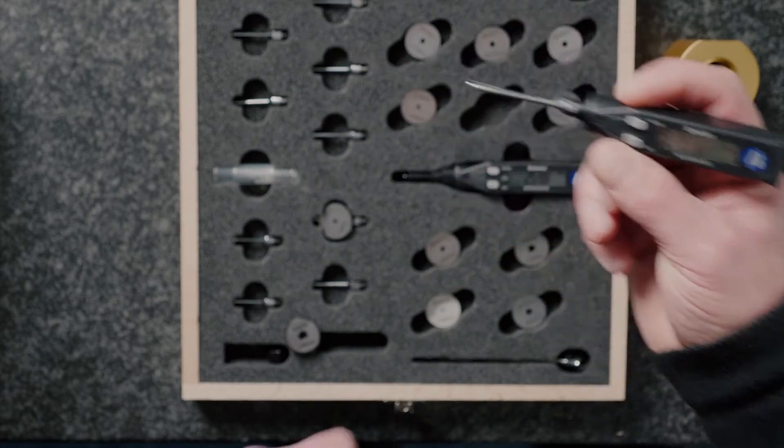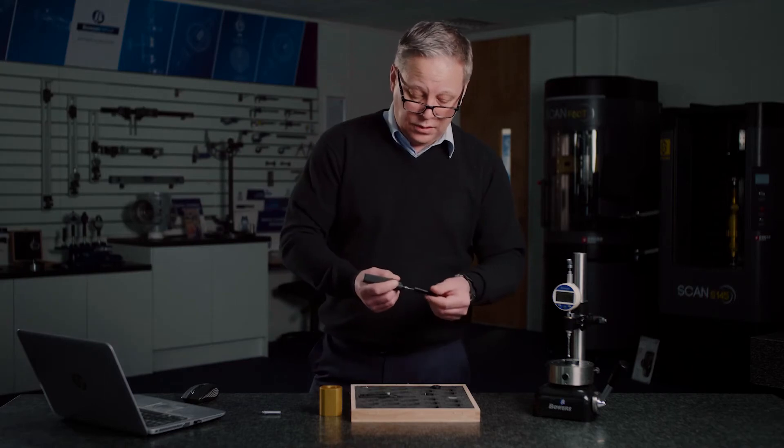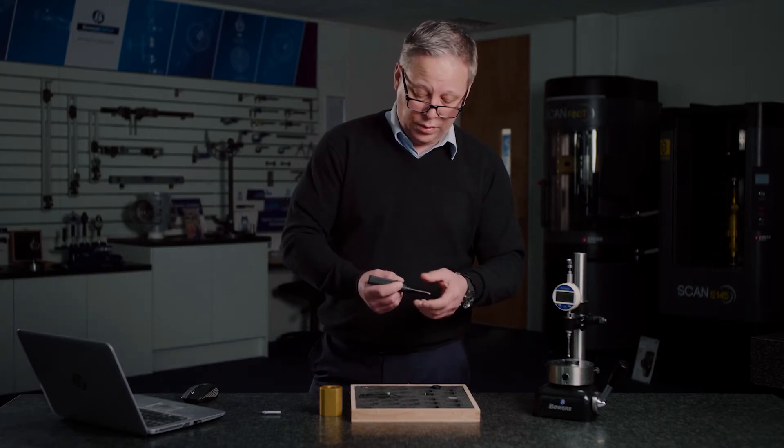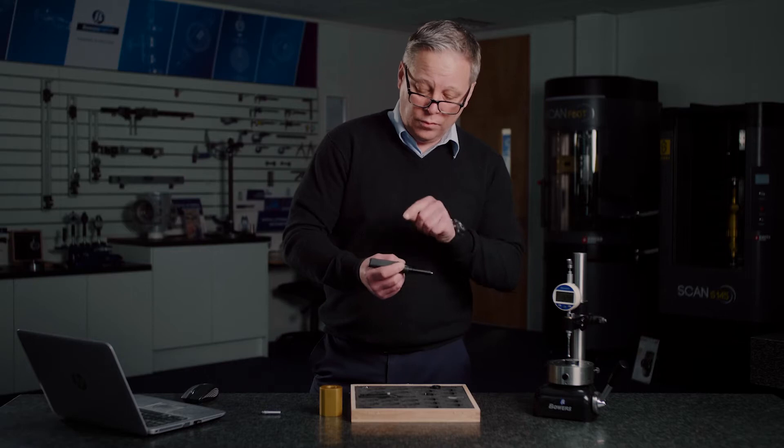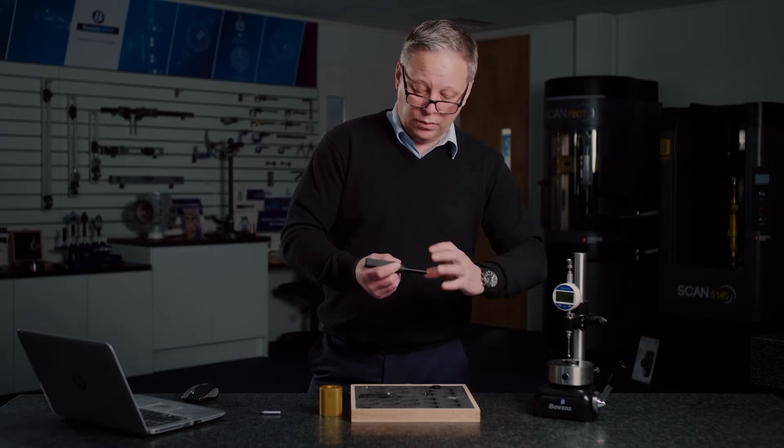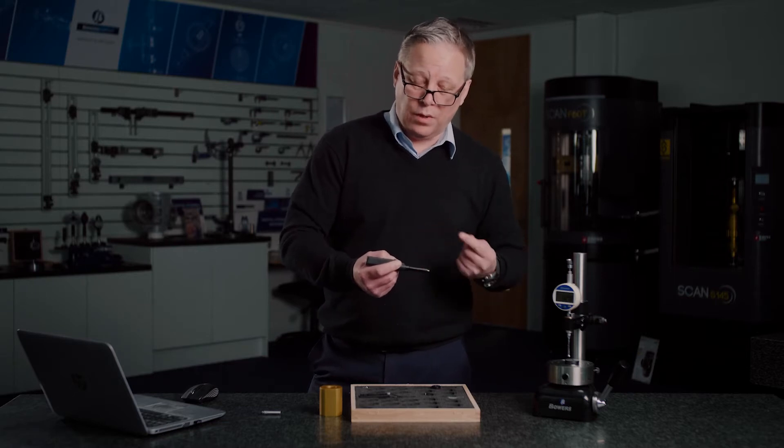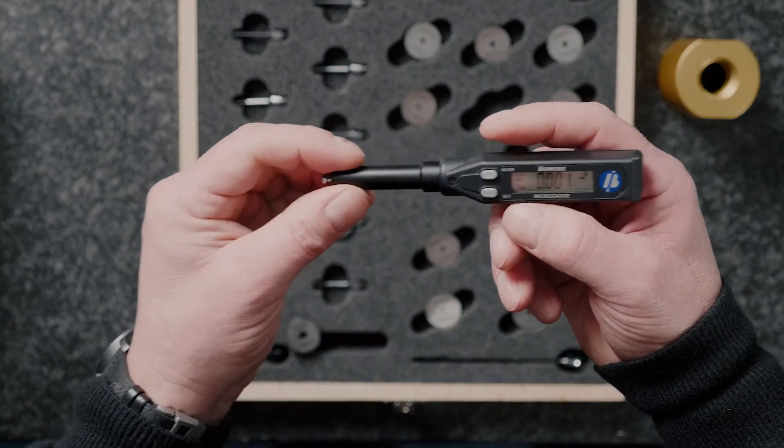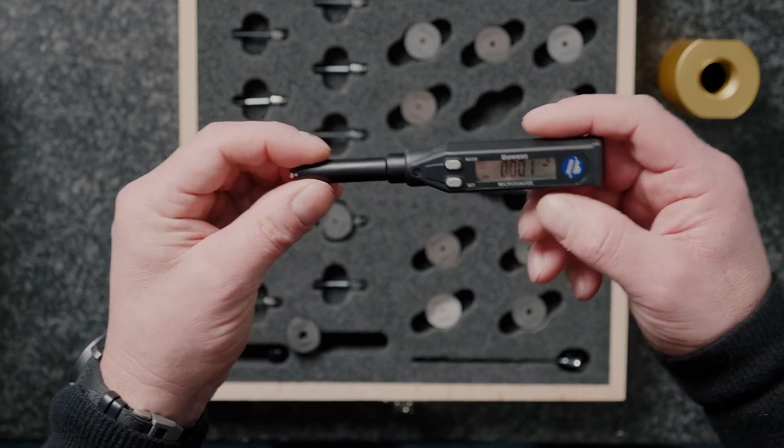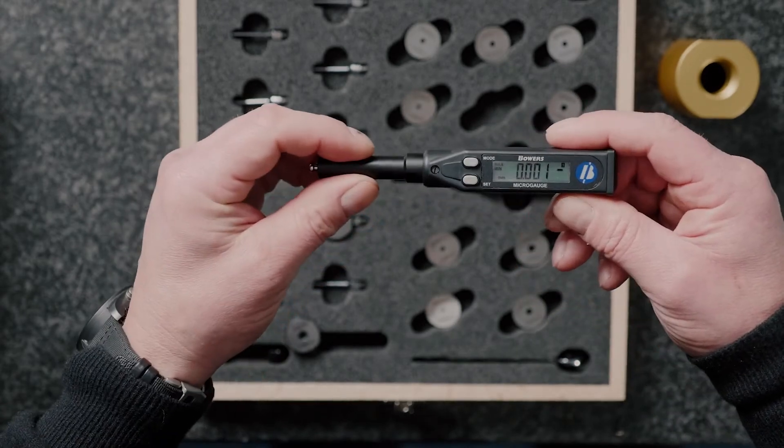Total indicator reading means if we were to insert that probe into a bore, reset, and then rotate the bore or rotate the gauge, we would be able to display the max minus min reading and give us an indication of form error, or in this case, two point ovality.